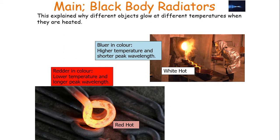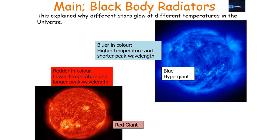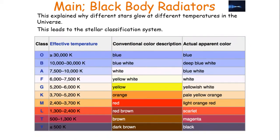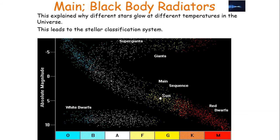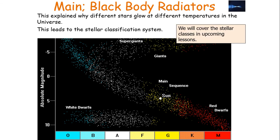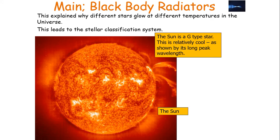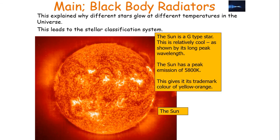This explains why different objects glow differently at different temperatures. When something looks white hot, it's bluer in colour — higher temperature and shorter peak wavelength. While something redder in colour has a lower temperature but a longer peak wavelength. This is why you can have blue hypergiant stars and red giant stars. This leads to the stellar classification system, which classifies stars based on their colour and therefore effective temperature — which we'll look at in upcoming lessons. The sun is a G-type star, which is a relatively cool star, shown by its longer peak wavelength. It appears predominantly orange-yellow, with a peak emission temperature of 5800 Kelvin.